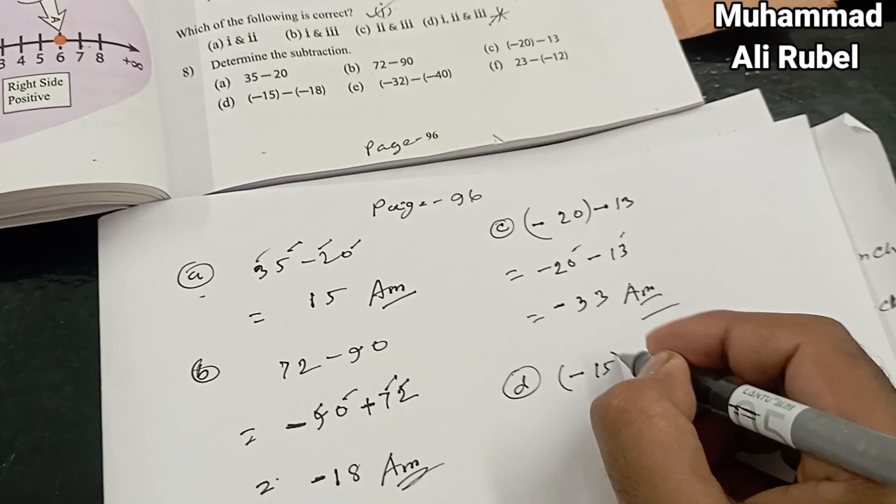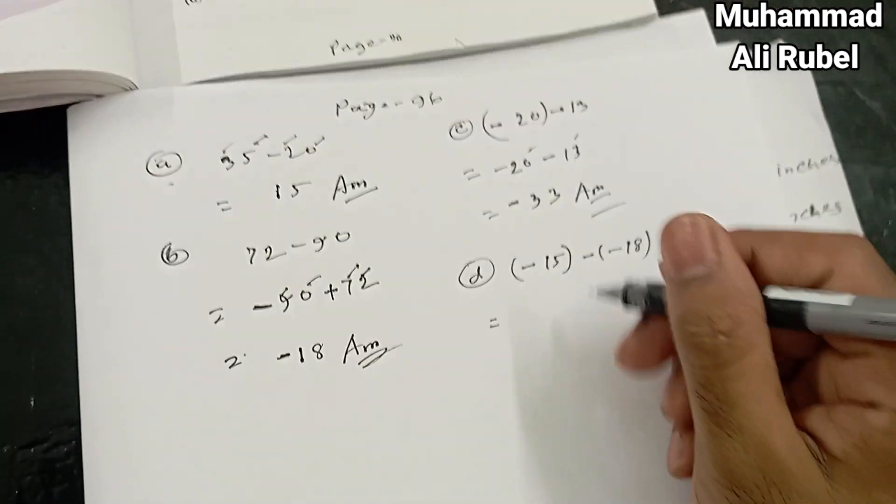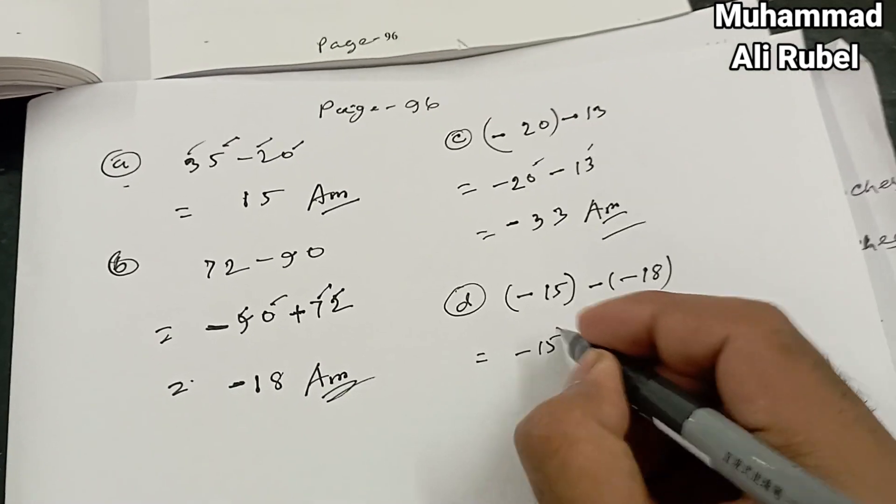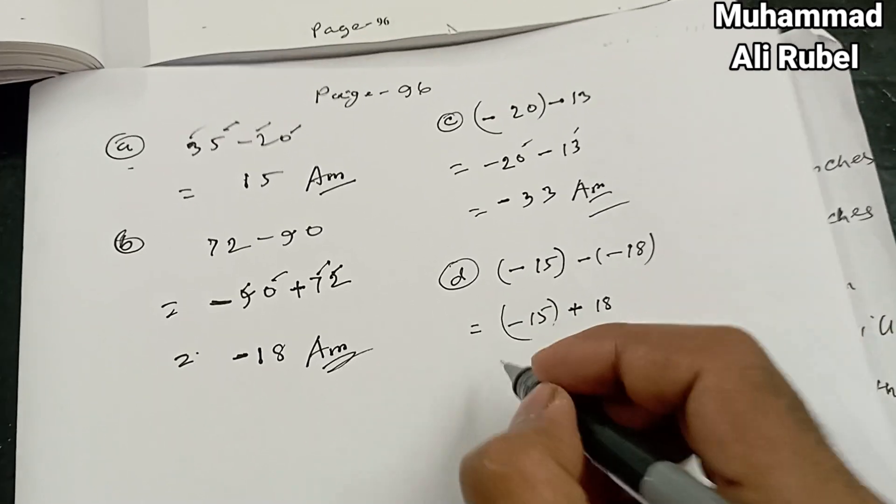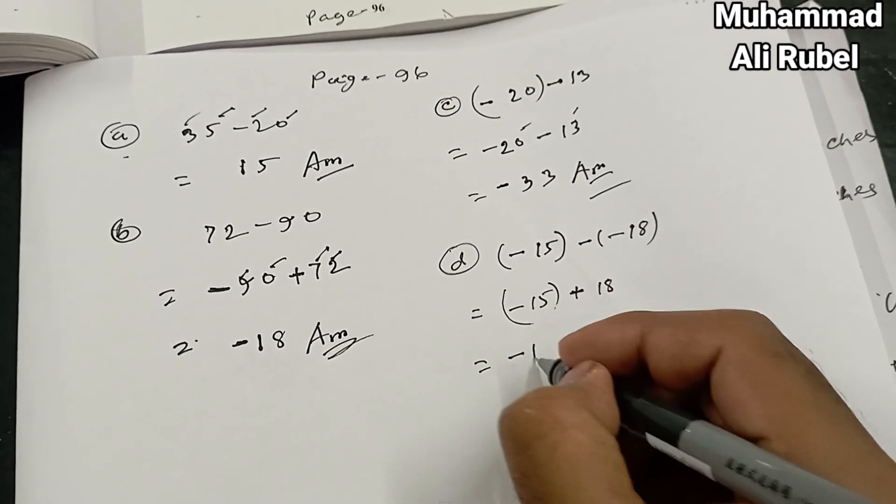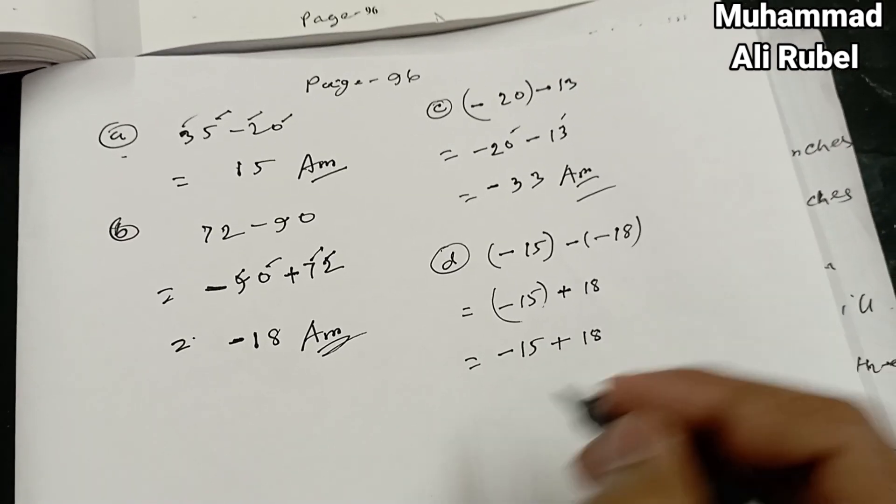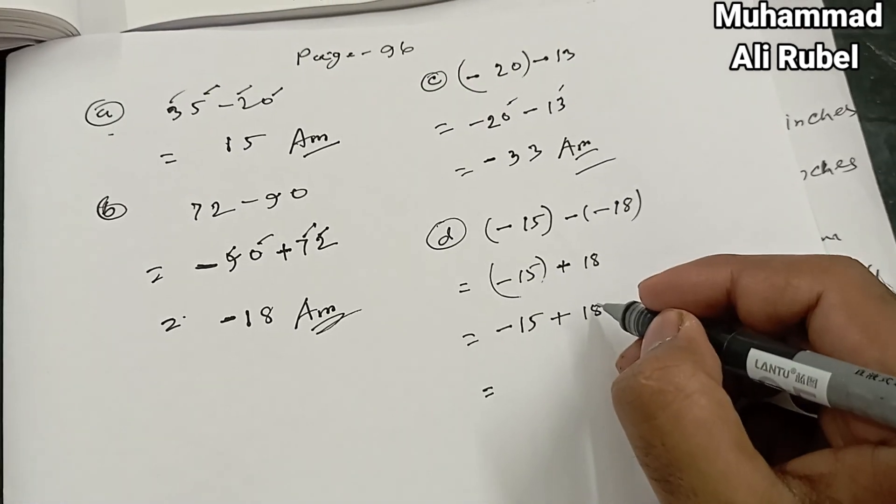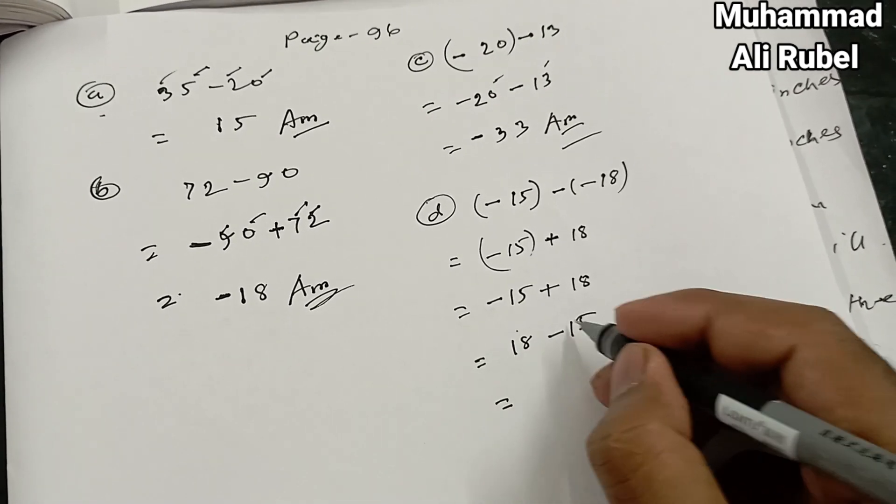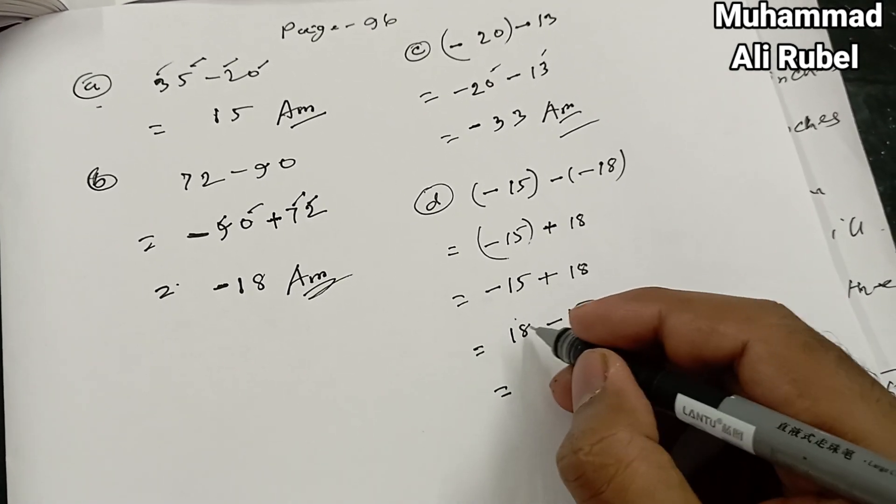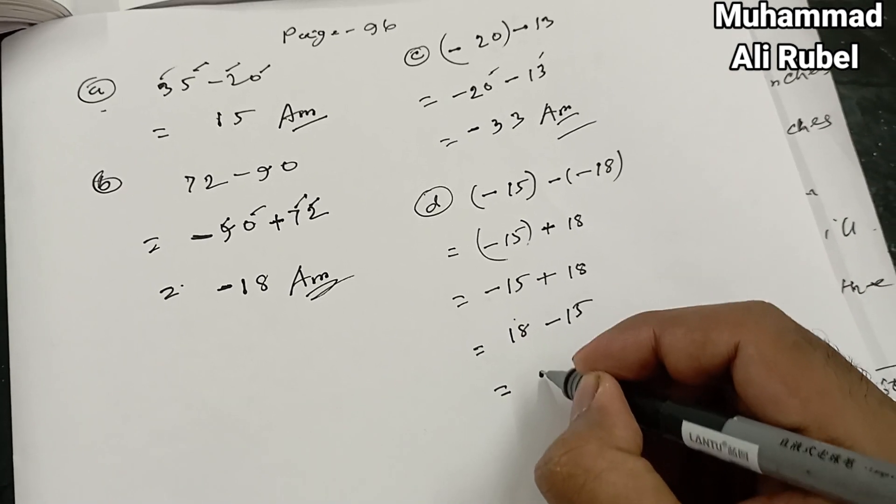Number (d): minus 15 minus negative 18. We solve it. Minus 15, minus times minus is plus, we get plus. Then 15 minus 18. 18 is the greatest number, so we write it first. Now we subtract 18 and 15, the answer is 3.